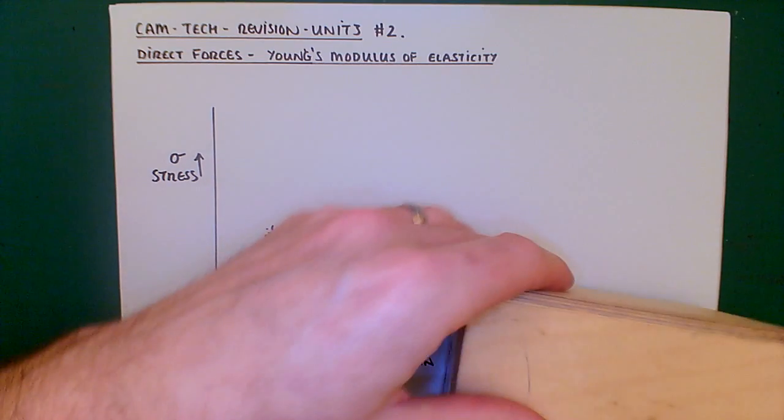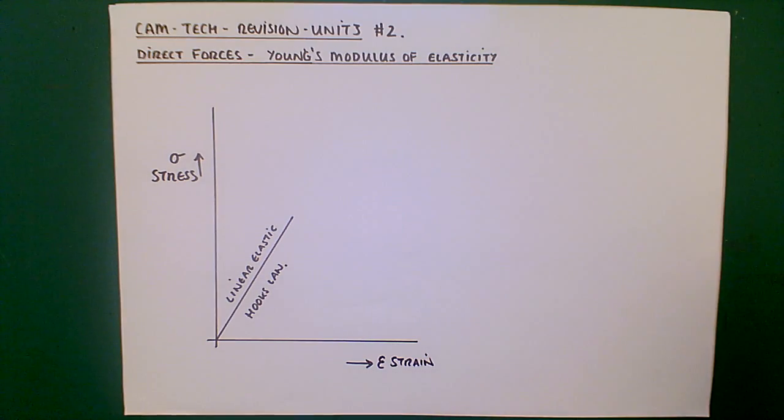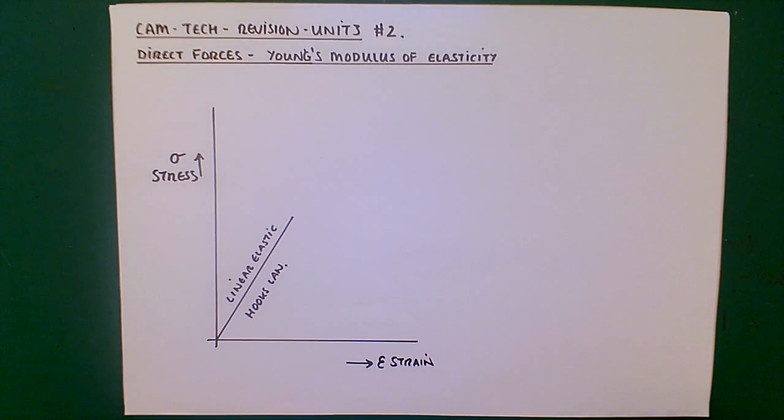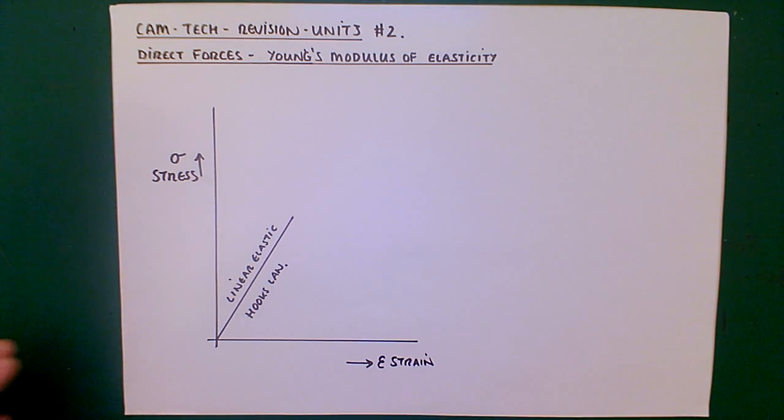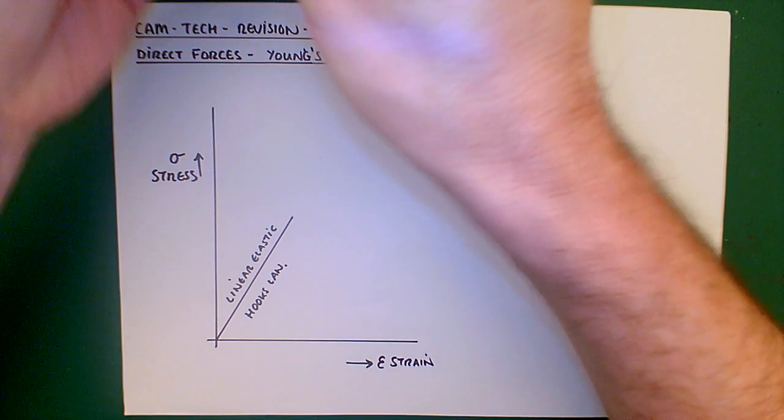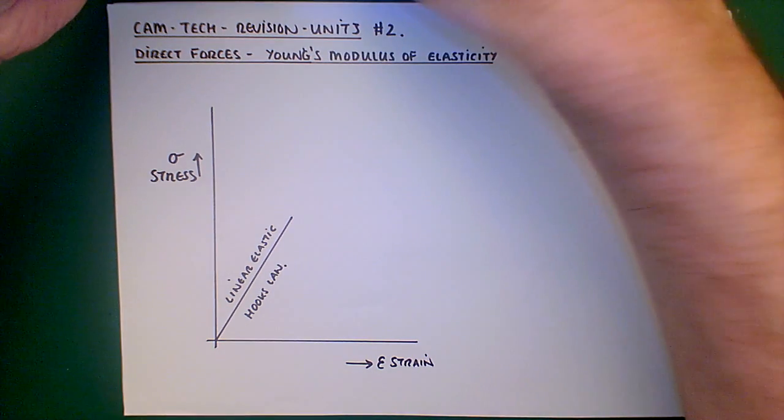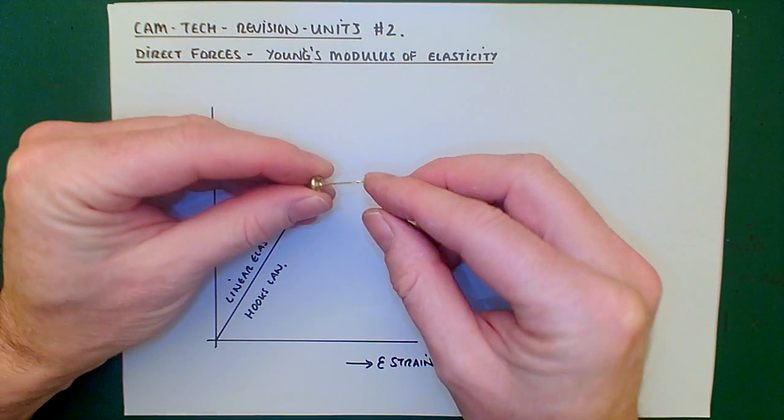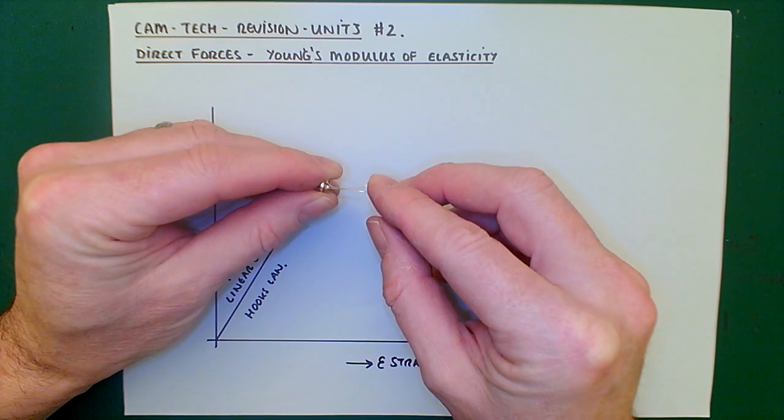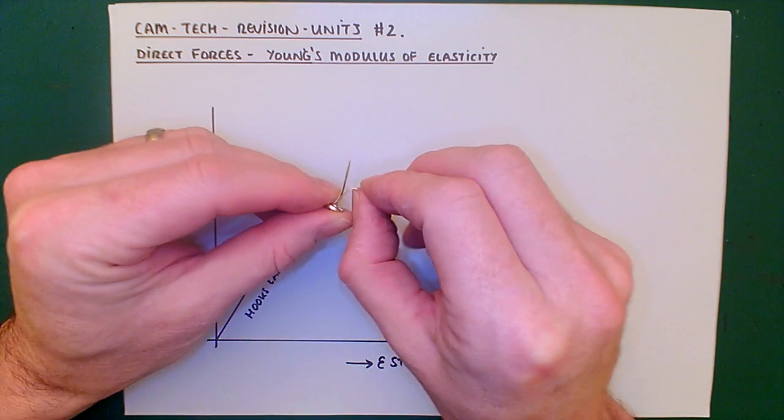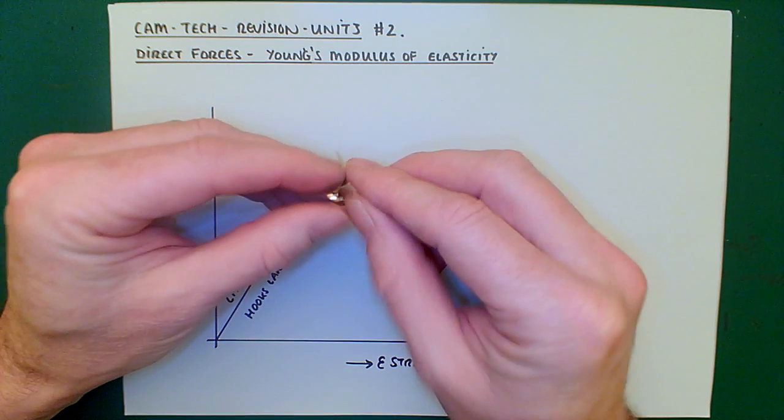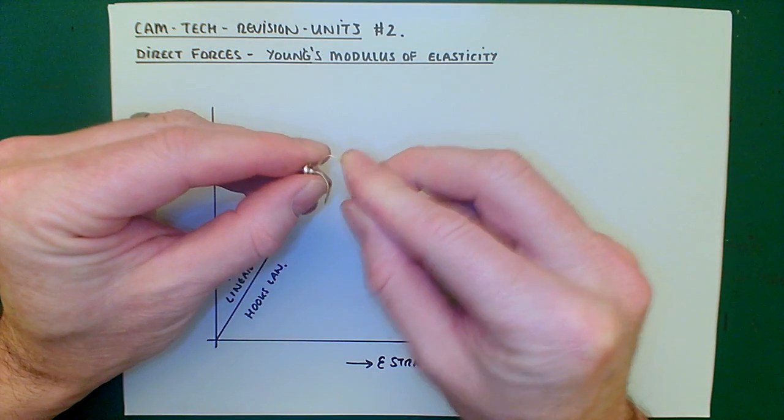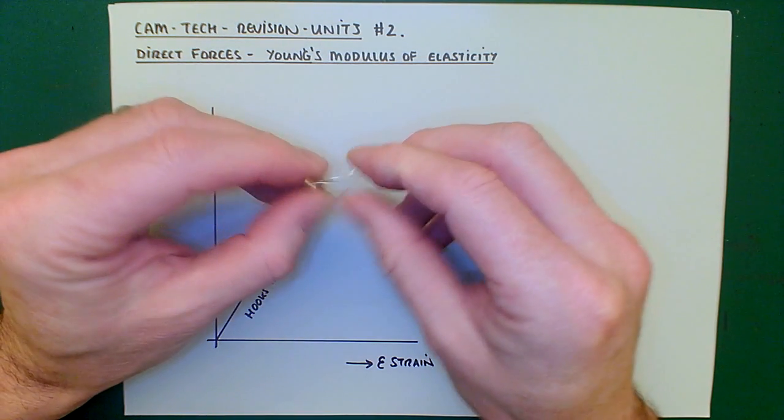That being said, if you take the load beyond a certain point, you can achieve a slightly different result. So here's a piece of material. Now this doesn't demonstrate elastic at all. It demonstrates plastic deformation. That is, the under load, it changes its shape and it cannot get back to its original shape. It's deformed.